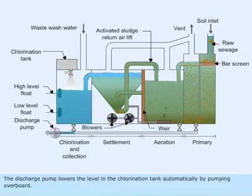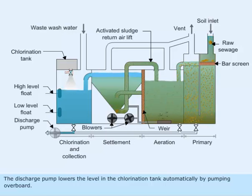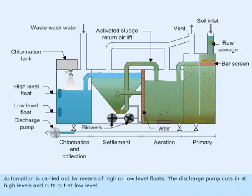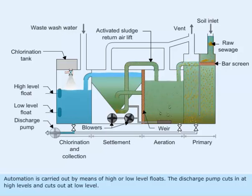The discharge pump lowers the level in the chlorination tank automatically by pumping overboard. Automation is carried out by means of high or low level floats; the discharge pump cuts in at high level and cuts out at low level.